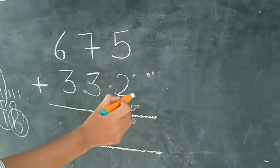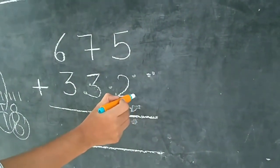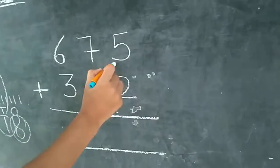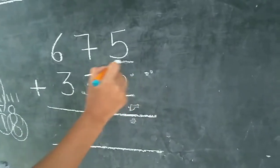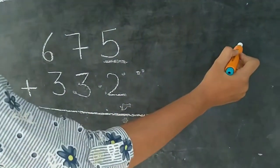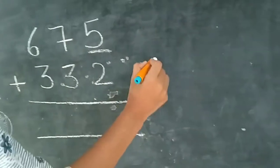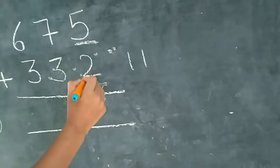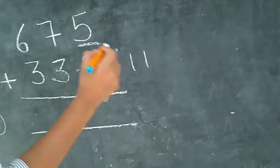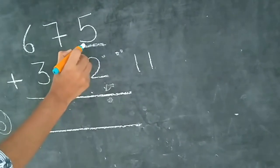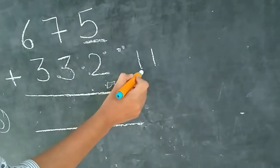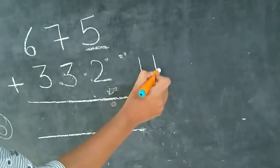Now next. 5 plus 2. Aapko 5 mein 2 add karna hai. 5 is already right here, so we draw only 2 lines: 1, 2. Count after 5: 5, 6, 7.